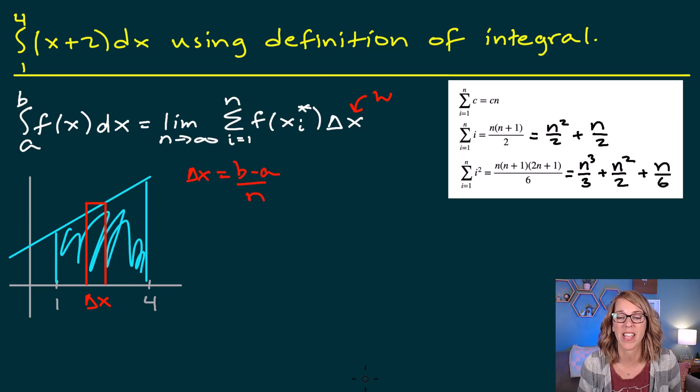For our particular example, that's going to be the limits of integration 4 and 1. So 4 minus 1 divided by n, or 3 divided by n.